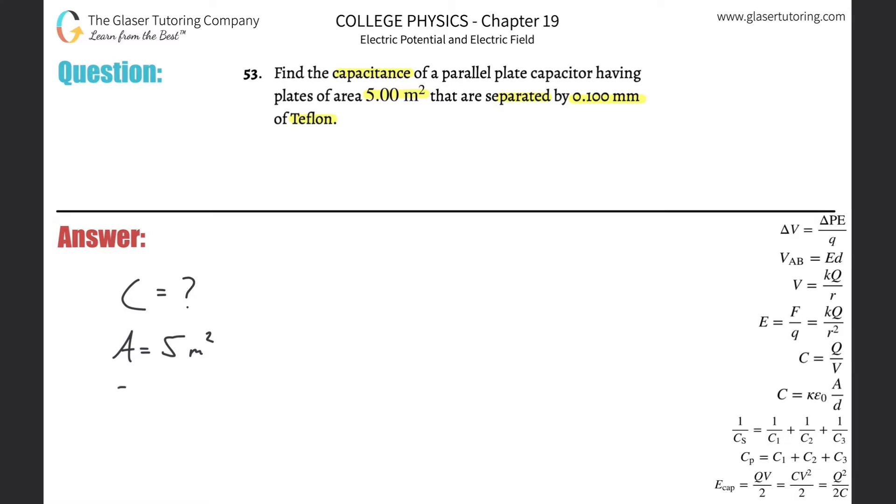We know that they're separated by distance, a.k.a. D is going to be 0.1 millimeter, but we need that in meters, so take the 0.1, multiply that by 10 to the minus 3. That'll get us the value in meters.